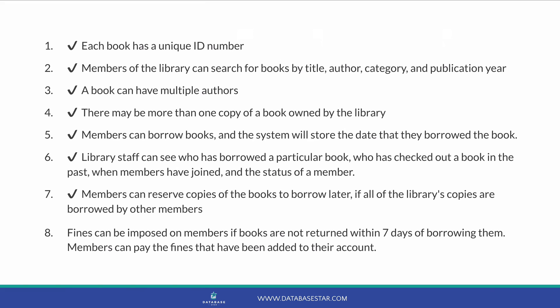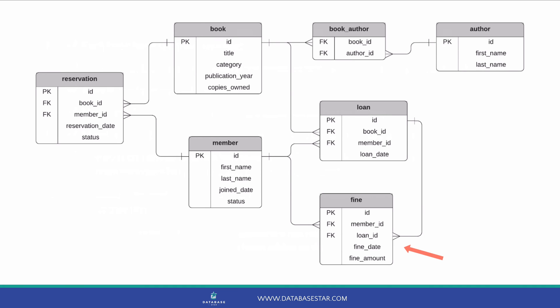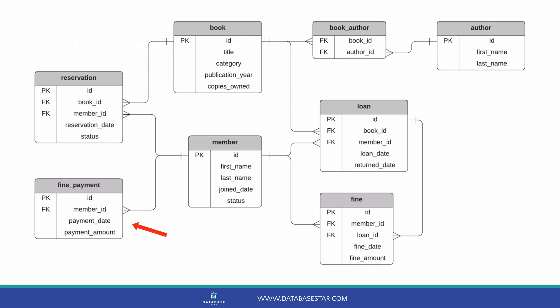The final requirement is about fines. Fines can be imposed on members if they don't return a book within 7 days, and the fines are added to their account for them to pay. We've added a fine table with a primary key, the member who got the fine, the loan that the fine is for, the date of the fine, and the amount. We've also got a new fine_payment table, which captures payments that a member has made — storing a primary key, the member who made the payment, the payment date, and the amount. Payments can be made independently of fines.